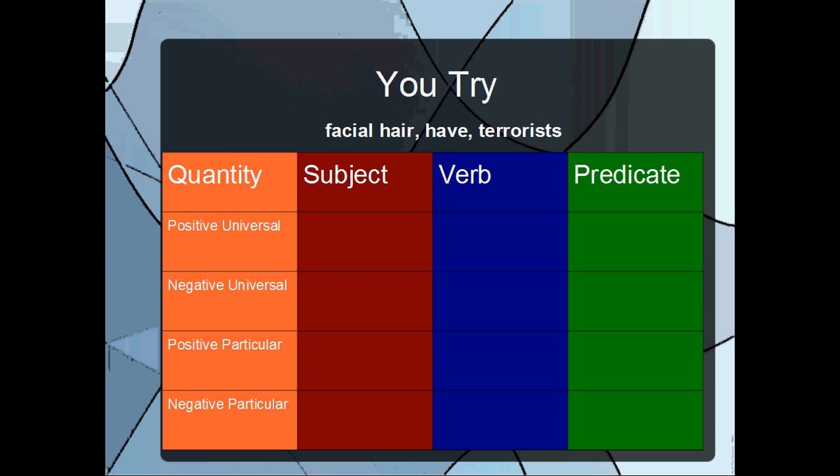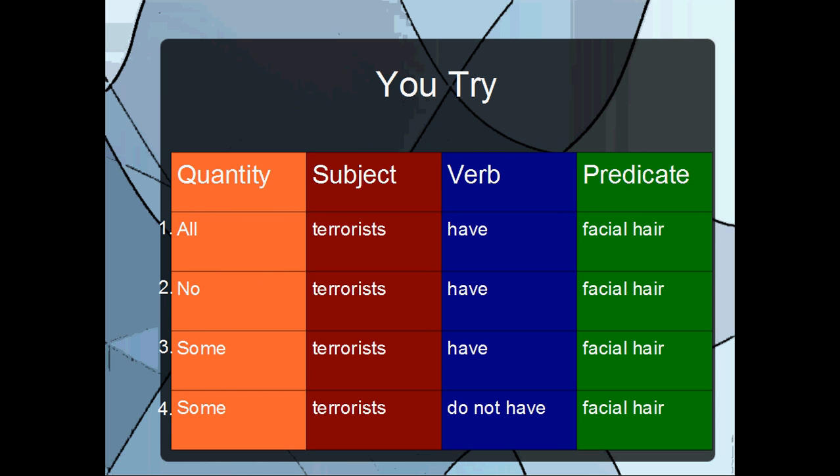If you need more time, you can pause the video. Otherwise, I'm going to move on to the answers. Okay, so the first proposition, all terrorists have facial hair. It's saying the category terrorist fully falls under the category facial hair. It's saying every single terrorist has facial hair.